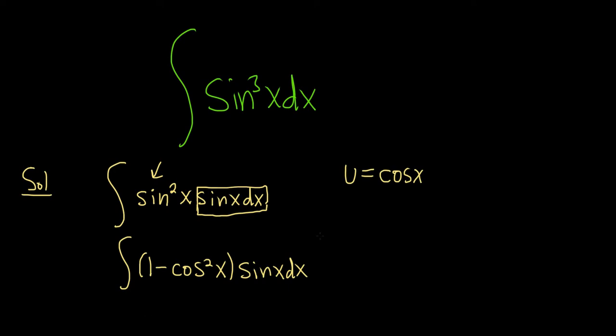So now we're good. Now we can make our substitution. So u is equal to cosine. So then du, well, the derivative of cosine is negative sine. So this will be negative sine x dx.